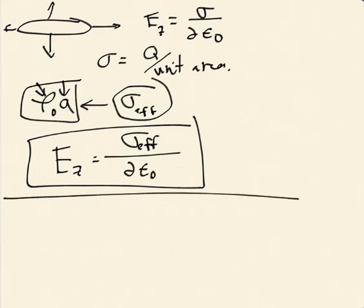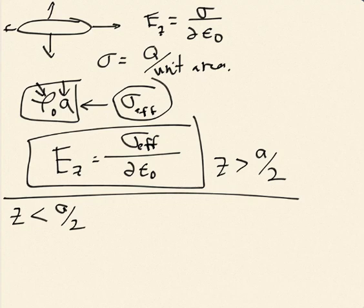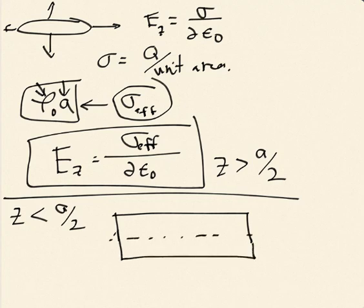Now consider z less than a/2 — points inside the slab. The field can vary with distance because there's charge there and new field lines can be created. The field lines still go straight up and down; they can't spread out, but charge causes new field lines to pop into existence. For this case, the pillbox has its bottom at z equals 0 and its top at some z inside the slab, so this distance is z. As I move the top surface, the charge enclosed by the pillbox varies.